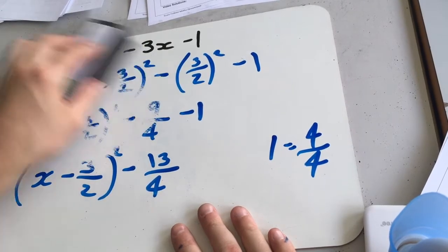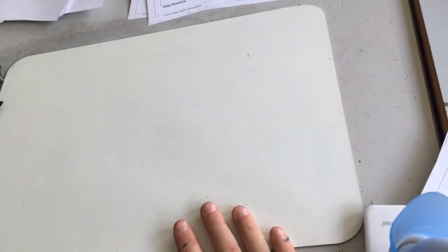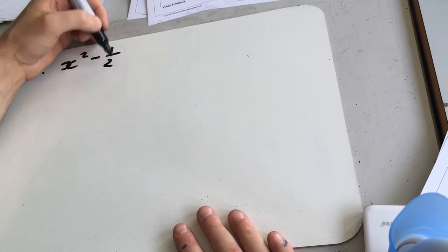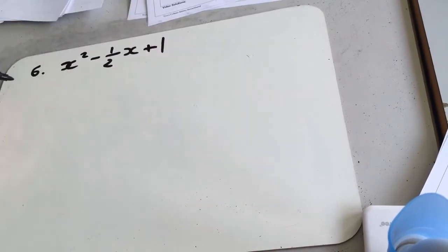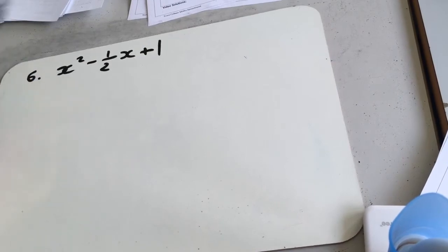And last one from 4b. x squared minus half x plus 1. So again, we've already got a half, so we're going to have to half it again, which can be a bit confusing.